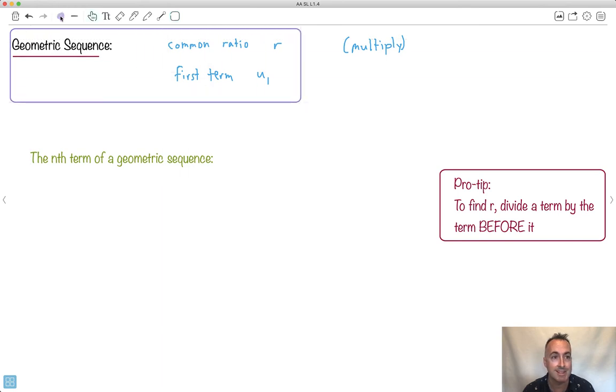Let's actually look at the nth term then, because we have an equation that tells us what to do here. There's the formula booklet: U_n equals U1 times R to the power of n minus 1. This is how we do it. This is the nth term.